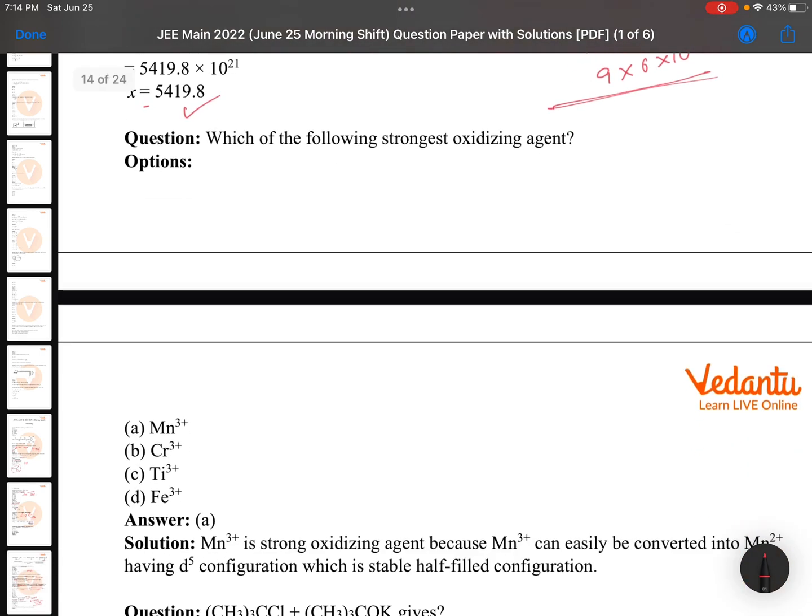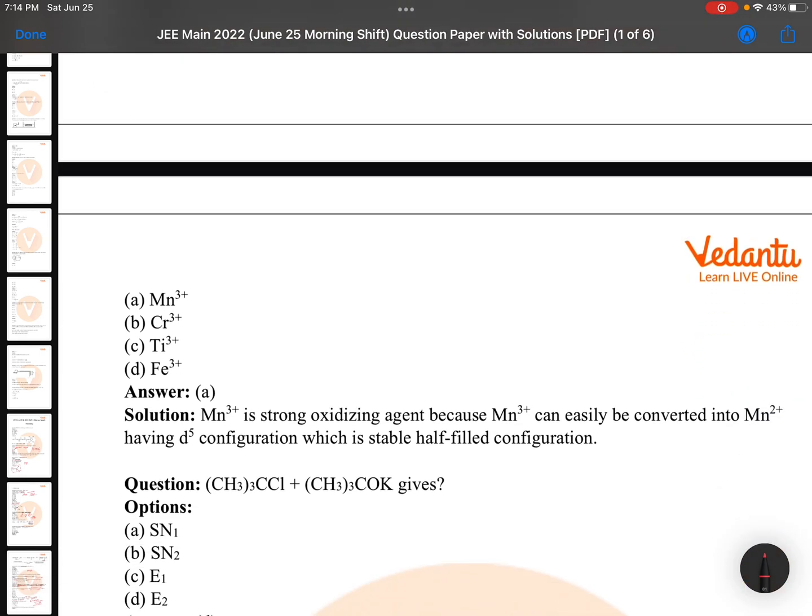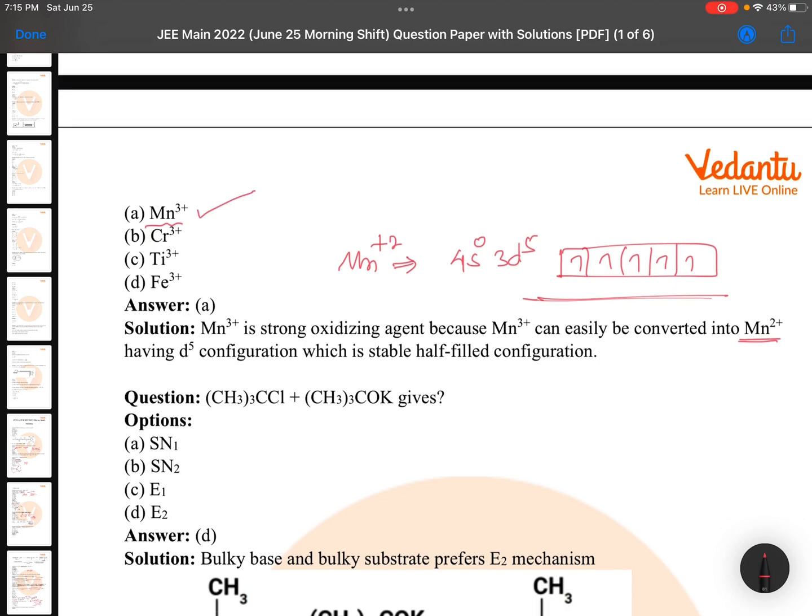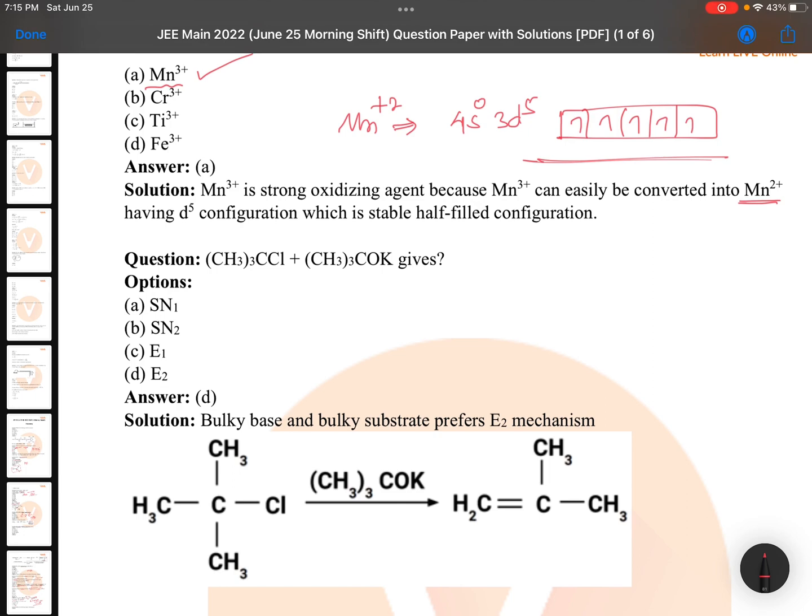Which is the following strongest oxidizing agent? Here you see manganese plus three is converted easily into Mn plus two, where Mn plus two is having Mn plus two means 4s zero 3d five. This is having five unpaired electrons, stable. So Mn plus three is easily converted to Mn plus two, so it is undergoing reduction. When it is undergoing reduction it is strong oxidizing agent. So one question based on d-block, conceptual question.